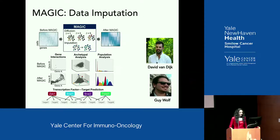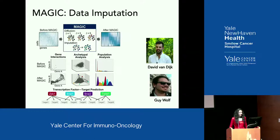The first algorithm we worked on when I got here is an imputation algorithm called MAGIC, done in conjunction with my postdoc David Van Dyke and Guy Wolf from the Applied Math Department. The main idea of MAGIC is to take walks through the data and pass values as you walk through. Before MAGIC, you have noisy, dropped-out data. After MAGIC, it's denoised and restored. We were really excited about MAGIC's ability to clean up and restore the data dimensions.